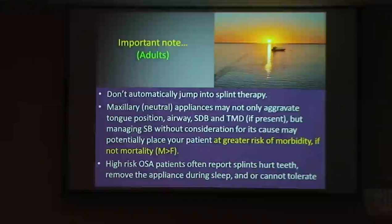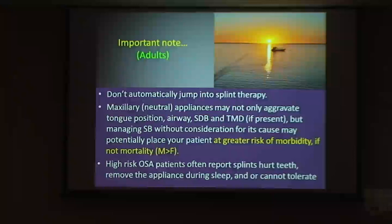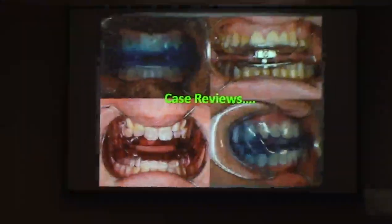In your referral, stipulate that you want the patient scoped. With adults, don't jump straight into a splint — I used to do this routinely, but don't. We avoid maxillary appliances where possible. If we're comfortable we're not compromising the airway, then yes we can make nightguards to protect teeth, but I make them for the lower jaw, not the top — less impact on tongue position. High risk patients usually complain that splints hurt their teeth or they take them out in their sleep.